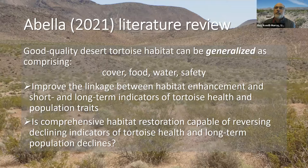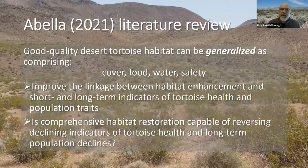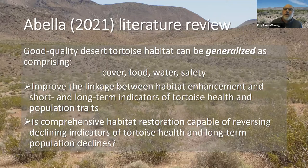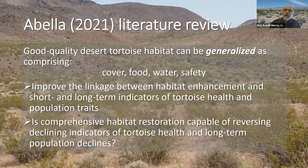Scott reviewed habitat quality in his presentation, pointing out that habitat can be generalized as comprising cover, food, water, and safety. He described important research questions to get beyond these generalizations, beginning with research that improves the regional linkage between habitat enhancement and tortoise indicators of health and population traits, and addressing whether comprehensive habitat restoration is capable of reversing declining indicators. Until these research questions are addressed, it will be hard to understand the role habitat restoration could have in aiding tortoise recovery.